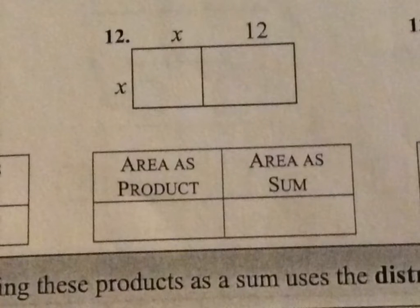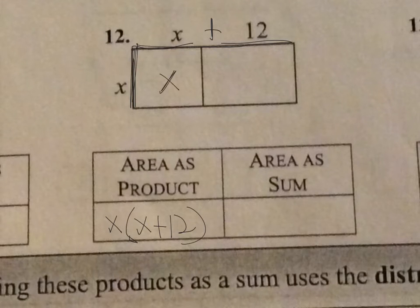So in this problem, we have x times, so areas are products. So just say x would be one of them. And then your length and width would be x plus 12. So x times x plus 12. And then areas of the sum would be x times x, which is x squared, plus x times 12, which is 12x. So x squared plus 12x is the areas of the sum.